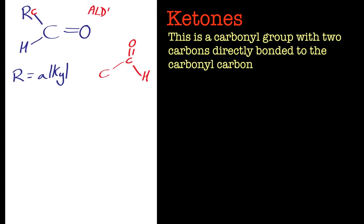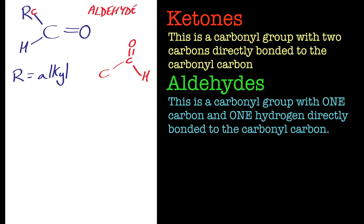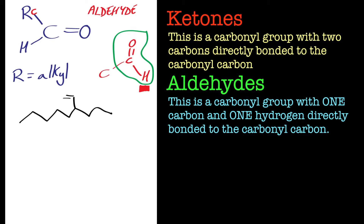Replacing one of the carbons for a hydrogen gives you the next type of functional group called aldehydes. They always have a terminal hydrogen there, so you can't extend the chain any further. But there's no reason why you can't have an aldehyde branching off from a chain, just like shown here.